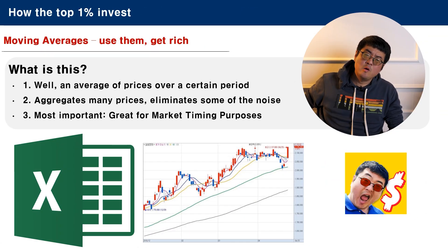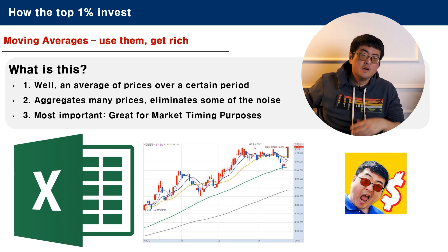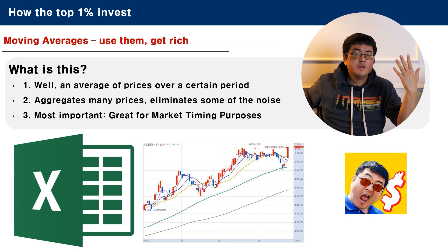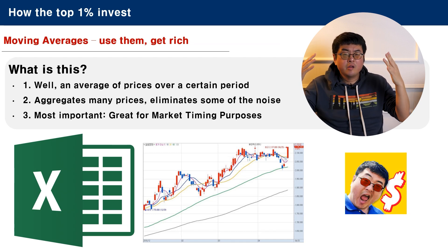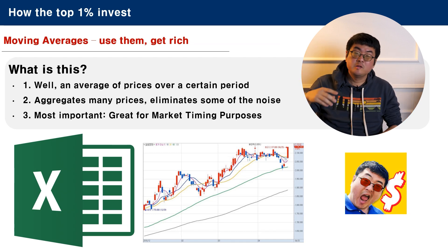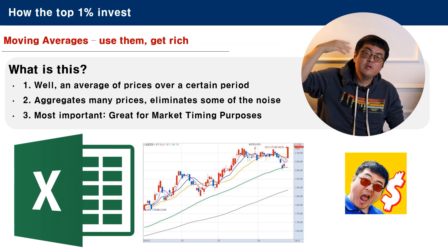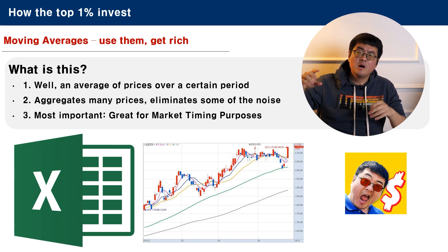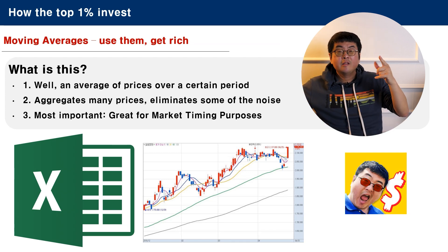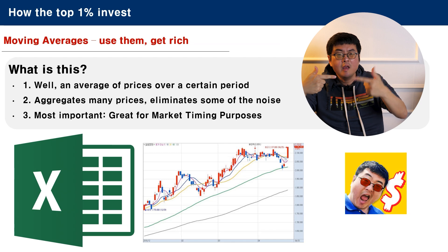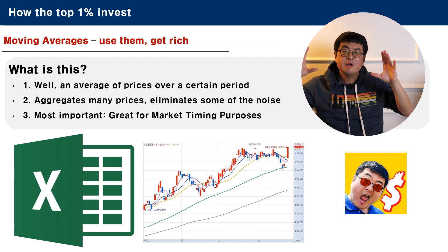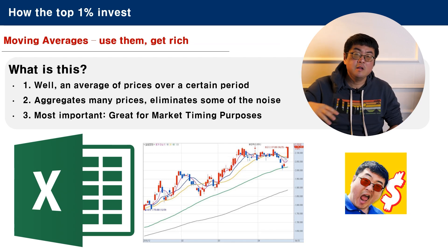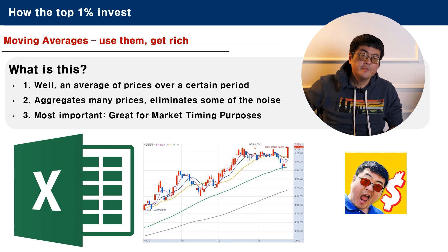Moving averages. Just use them and get rich. What is a moving average? It's an average of prices over a certain period. For example, if you have a 50-day moving average, it means you add up the prices in the last 50 days and then take the average of these 50 prices. You can easily do it in Excel.